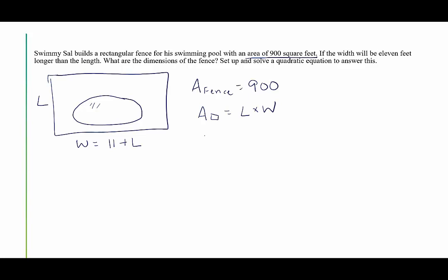And now what we're going to do is we're going to put this all together. So the area of the fence, which is a rectangle, is 900 square feet. We know that the length, we're just calling that L. And we know the width is equal to 11 plus L. So we're just going to substitute in what we can. Great. Now we have it in terms of one variable. Let's distribute the L. We get 900 equals 11L plus L squared. It looks like we have a quadratic. So I want to set it equal to 0. I'm going to subtract 900 from both sides. This gives me 0 equals L squared plus 11L minus 900.